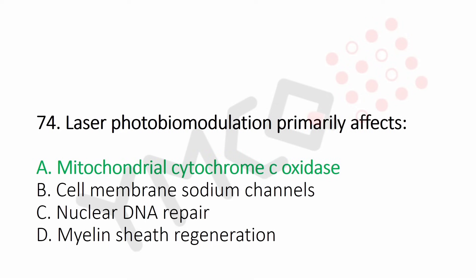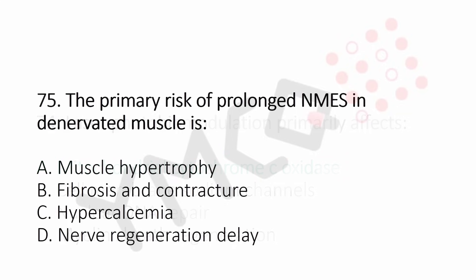Now let's move to question number 75. The primary risk of prolonged NMES in denervated muscle is: Option A, muscle hypertrophy. Option B, fibrosis and contracture. Option C, hypercalcemia. Option D, nerve regeneration. And the answer is Option B, fibrosis and contracture.